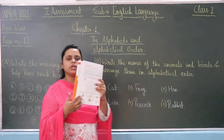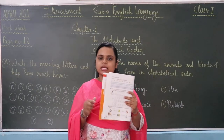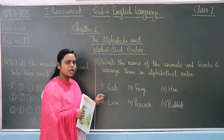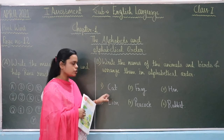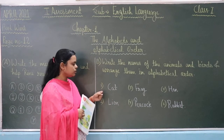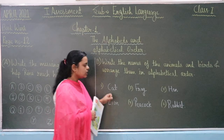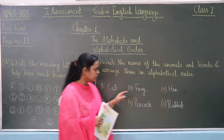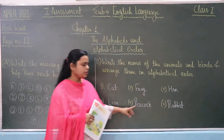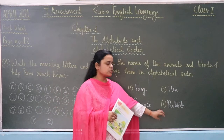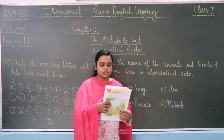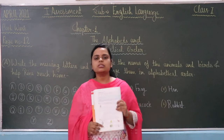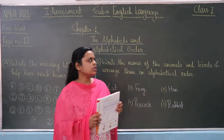You have to look at the pictures of animals and fill in the blanks with the name shown in each picture. The first picture is a cat — fill the blank with 'cat.' Second is frog. Then hen. Then lion. Then peacock. And the last picture is a rabbit. So that was exercise A and exercise B — very simple, very easy exercises.